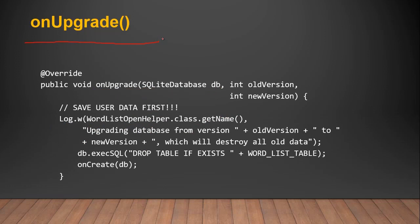The next abstract method is onUpgrade, also inside SQLiteOpenHelper. You must implement this method. It gets called when you change the schema of your table, and it passes three parameters: a reference to the database, the older version, and the new version. You can save your data here because upgrading will destroy the table alongside its data.